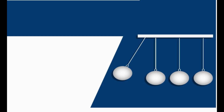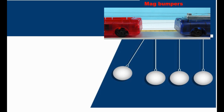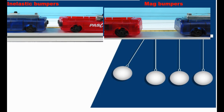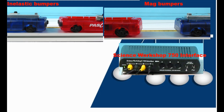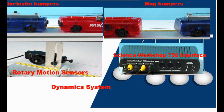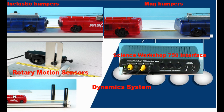The equipment of this experiment includes magnetic bumpers and elastic bumpers, a Science Workshop 750 interface, a rotary motion sensor, and a dynamics system setup.